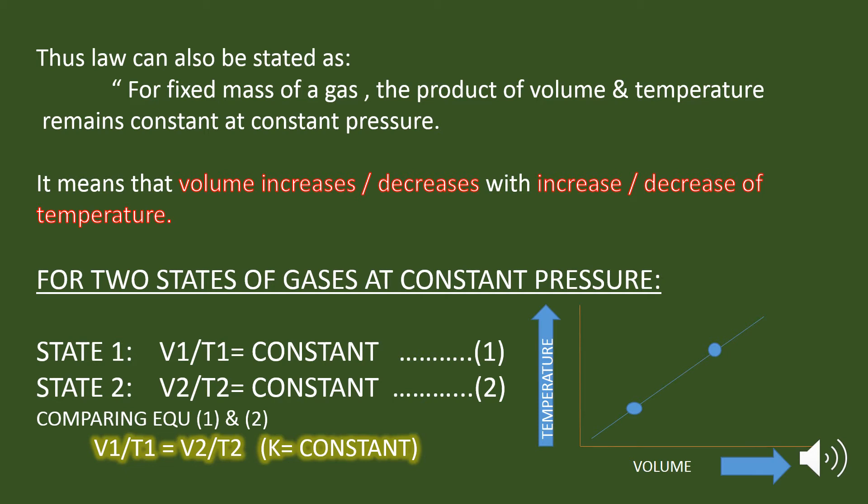If the temperature changes to T2, then the volume will also change to V2, such that the ratio remains the same. So we can write this as V2 by T2 is equal to K. Now comparing these two equations, we can write this as V1 by T1 is equal to V2 by T2.